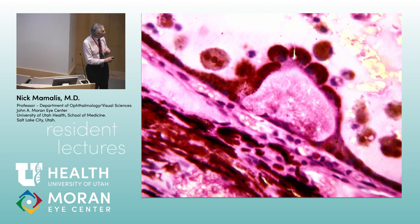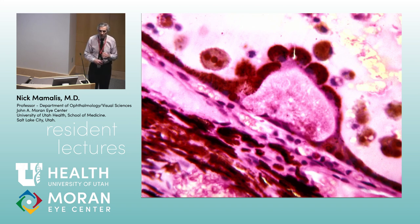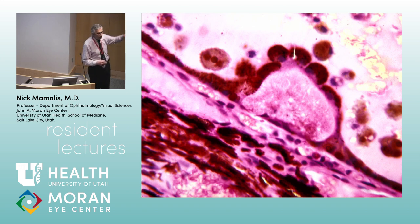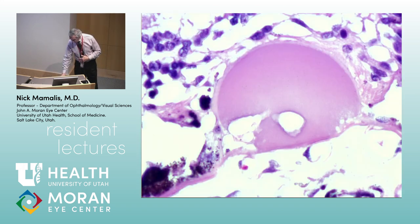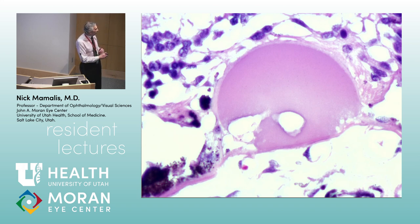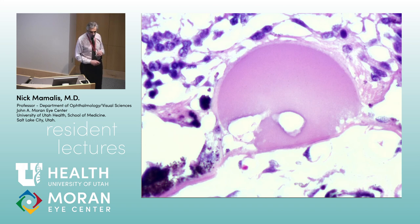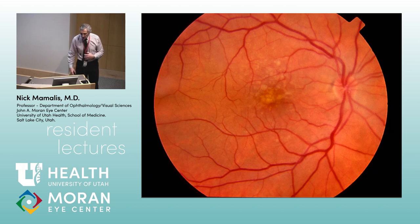Drusen are deposits rich in lipofuscin — essentially waste products of RPE metabolism that get excreted and build up in that area. Here's a giant drusen — that's going to disrupt the overlying RPE and cause degeneration where the RPE underneath degenerates. You can also get more diffuse drusen: larger, more confluent, with loss of the overlying RPE.